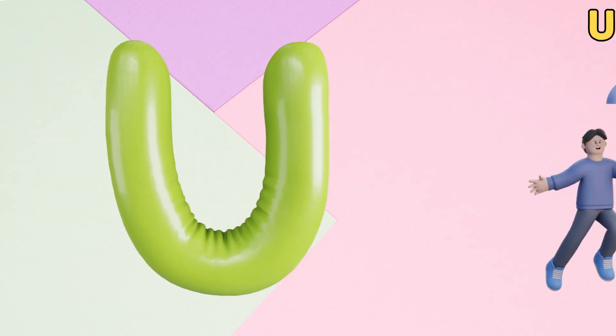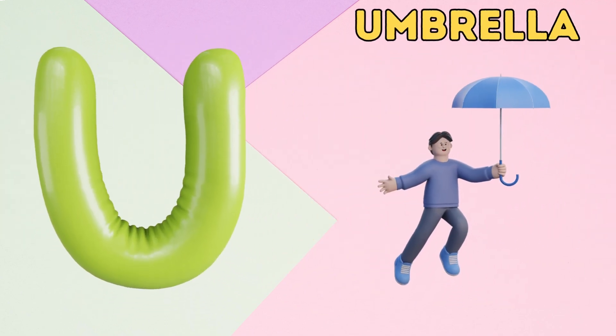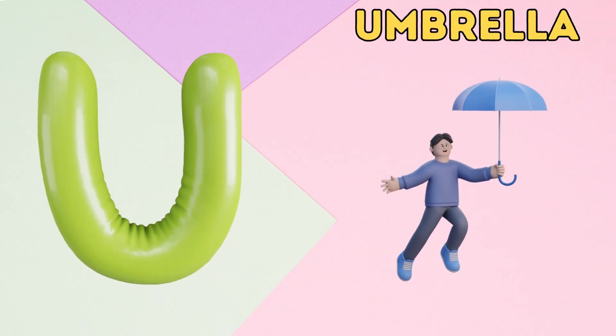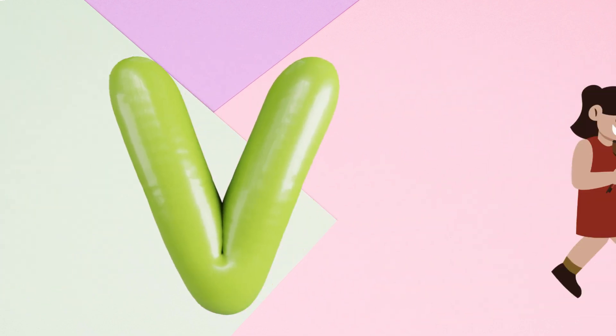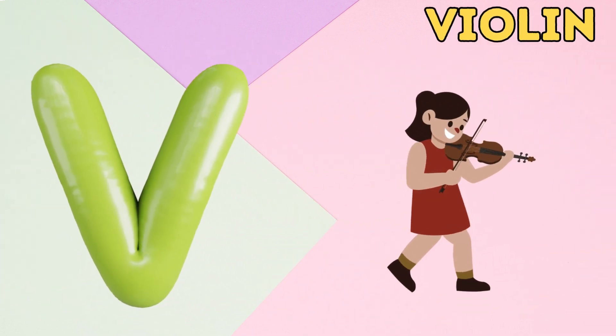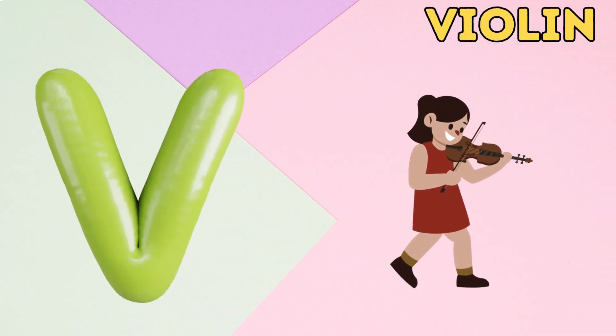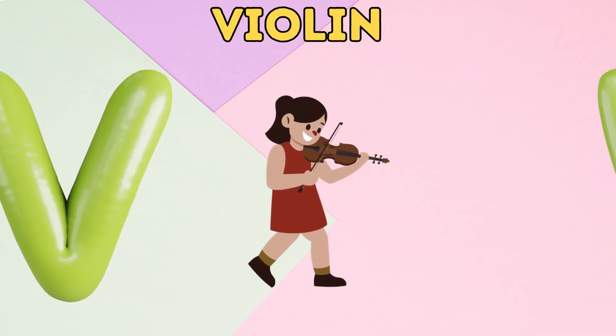U is for umbrella, u-u-umbrella. V is for violin, v-v-violin.